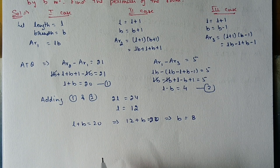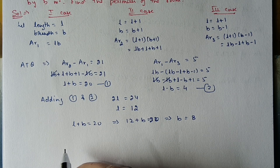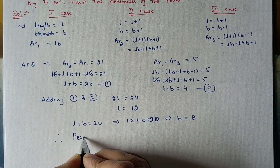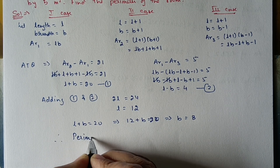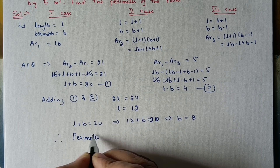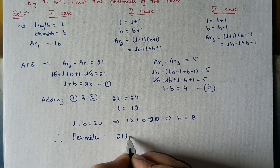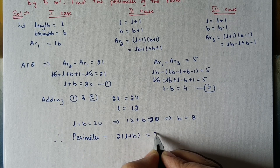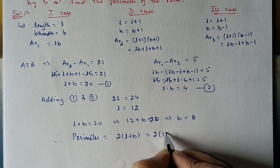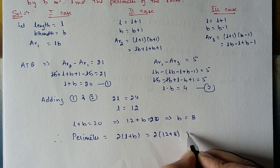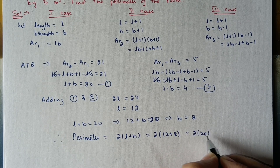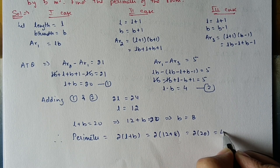Therefore, perimeter = 2(l + b) = 2(12 + 8) = 2 × 20 = 40 meters.